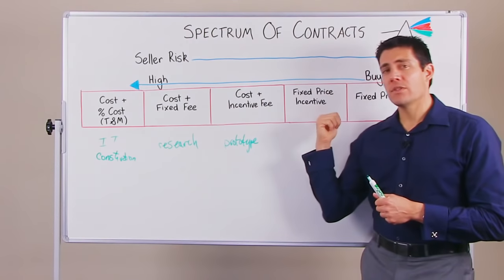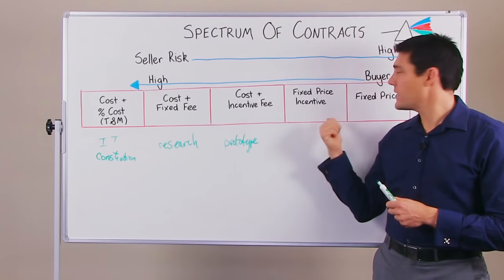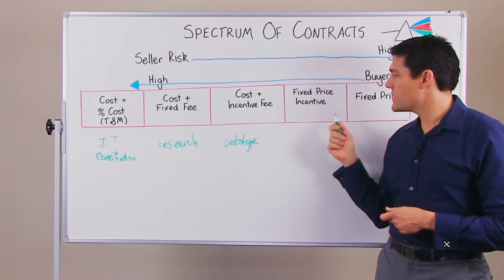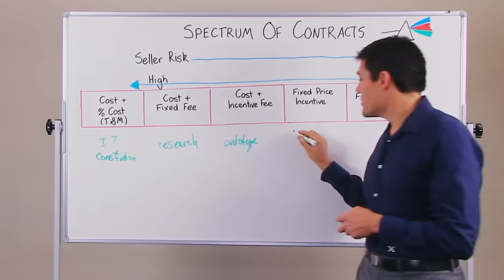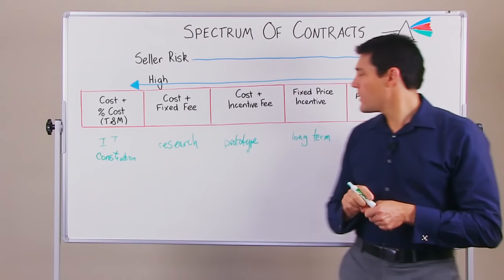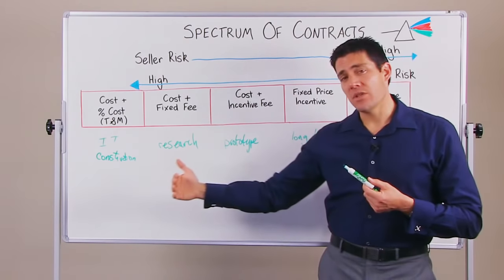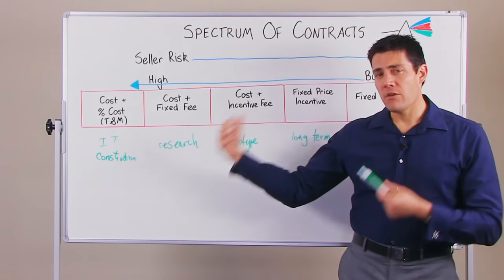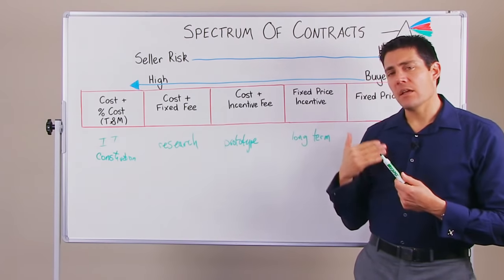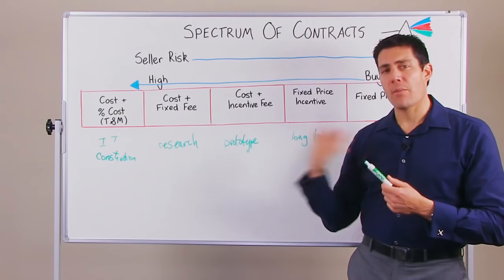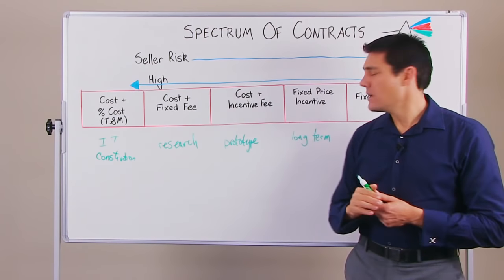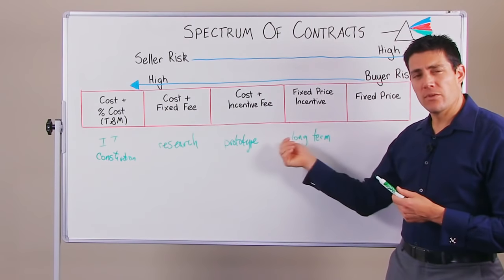The next type is the fixed price incentive contract. You don't see these a lot because they're very complex to manage and administer, and they're generally used for very long-term projects. For example, if you're getting goods manufactured overseas in Thailand, Vietnam, or China over a long three-year run, you might engage the manufacturer on a fixed price incentive contract. Over that duration, the supplier has the ability to improve their operational efficiency, maximizing their profit while maintaining quality and delivering the goods you need. These are very useful for long-term projects.